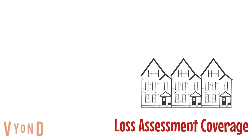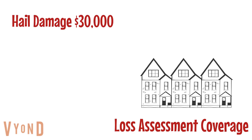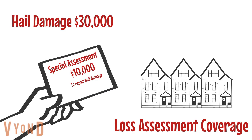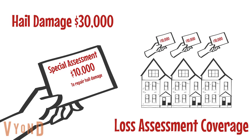Loss assessment is one of the most important optional coverages when living in a townhome or condo. Following an insurable loss, the homeowners association can send out a special assessment to raise funds to repair or replace damaged property. For example, hail rolls through your neighborhood and damages the roofs in your community. The cost to replace the damaged area is $30,000. The HOA can divide the cost by all unit owners in the form of a loss assessment. Loss assessment coverage will protect you if it's a covered insurable loss.